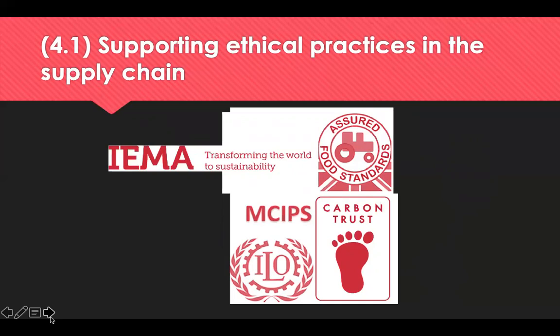Organisations that represent good ethical conduct include CIPS — the Chartered Institute of Procurement and Supply — the ILO (International Labour Organisation), the Institute of Environmental Management Assessment (IEMA), Assured Food Standards, Carbon Trust, the Ethical Trading Initiative (ETI), Fair Trade Foundation, and Anti-Slavery International. Research these organisations: where do they operate, who are their members, what are their aims, and how do they achieve them?